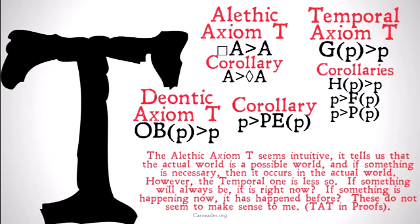The alethic axiom T seems intuitive. It tells us that the actual world is a possible world, and if something is necessary, then it occurs in the actual world as well. However, the temporal one is less so. If something will always be the case, it is the case right now. If something is happening now, then it has happened before. These do not seem to make sense to me.